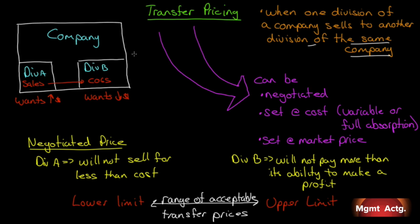In a decentralized organization, each manager is responsible for the profit and loss of its division — we call that P&L responsibility. So we have a profit center, which is also a cost center. Division A clearly will want the highest selling price it can get, while Division B wants the lowest cost of goods sold possible. So how do we set a transfer price between A and B that is in the best interest of the company, and not simply the best interest of one division?